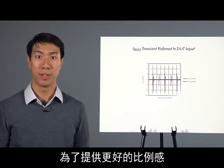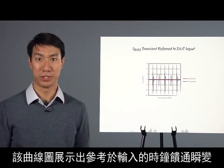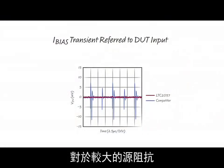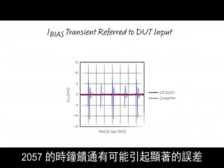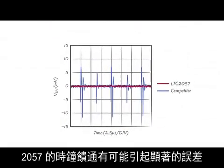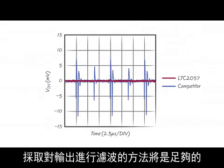To provide a better sense of scale, this plot shows the clock feed-through transients referred to the input. For larger source impedances, the 2057's clock feed-through may introduce significant error, but at this level, filtering the output will be sufficient.